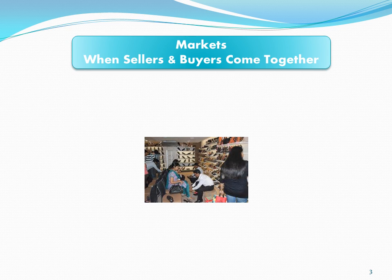A market is any place where buyers and sellers come together. Here I have an example of a shoe store. On the supply side, we have a chain of actors involved in supplying the product — companies that are making the raw materials, the rubber and the canvas and the other components of the shoes.